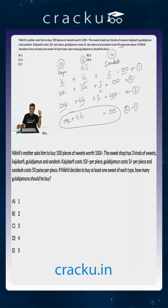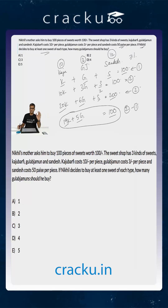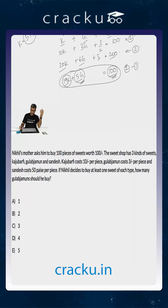Now, what are the values that K can take? We know that K, G, and S all have to be greater than or equal to 1, because Nikhil purchased at least one sweet of each type. Looking at 19K plus 5G equals 100, note that 100 is a multiple of 5 and 5G is also a multiple of 5, so 19K must also be a multiple of 5. This implies that K is of the form 5 times K1 for some natural number K1. Substituting, you get 95K1 plus 5G equals 100.